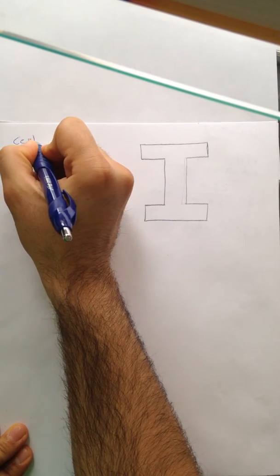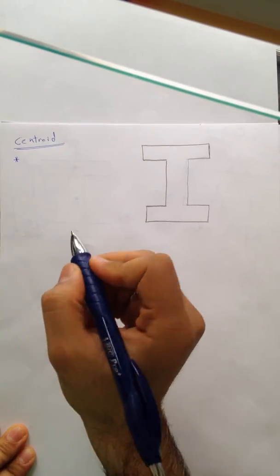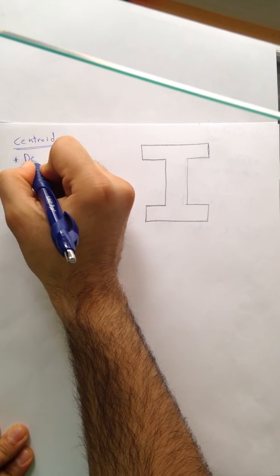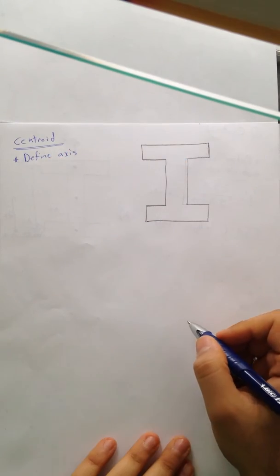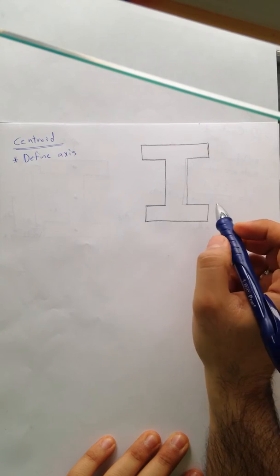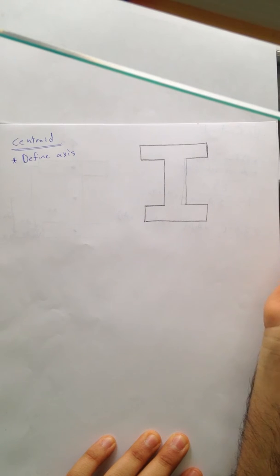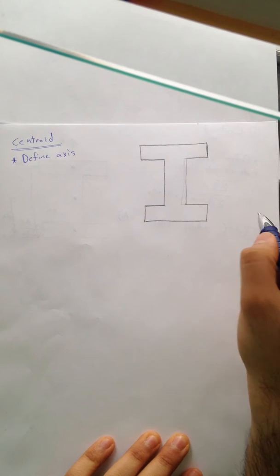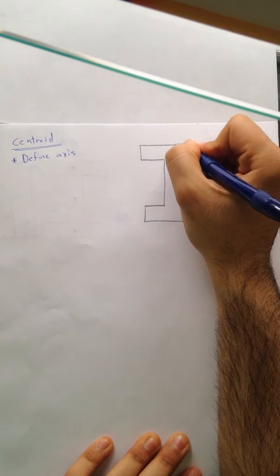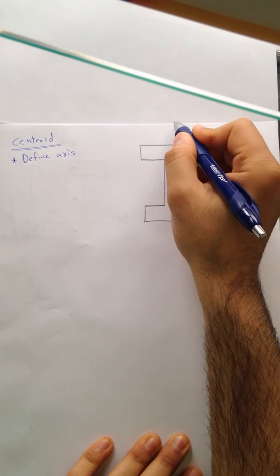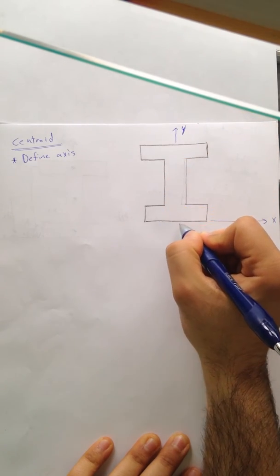So I'm going to write a few steps. First, we're going to find the centroid. The first thing you need to do is define the axis. We have this beam, and we can define the x-axis to be in the middle, at the top, or at the bottom. For our case, let's pick it to be at the bottom — that's the x-axis — and the y-axis would be somewhere in there.